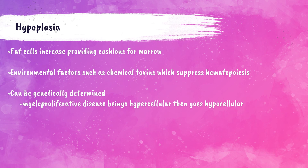Hypoplasia is where the adipocytes of the yellow marrow increase. Since yellow marrow is hematopoietically inactive, this represents a suppression of blood cell development within the marrow. This can be caused by environmental factors such as exposure to toxins like pesticides, or genetically — for example, myeloproliferative disease, which involves disorders characterized by cellular proliferation in the bone marrow that becomes hypoplastic.